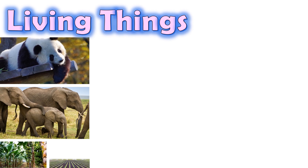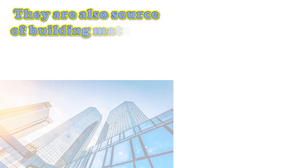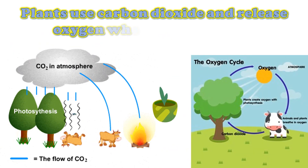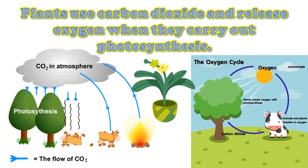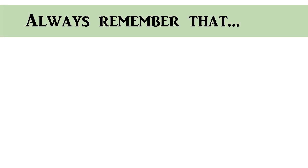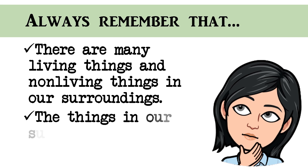Our surroundings have many living things, such as animals and plants. They are important as they are a source of food for humans and other animals. They are also a source of materials for buildings, paper, and clothing. Plants use carbon dioxide and release oxygen when they carry out photosynthesis. What would happen to the amount of these gases in the air if there are no plants? We should always remember that there are many living and non-living things in our surroundings, and the things in our surroundings are important.